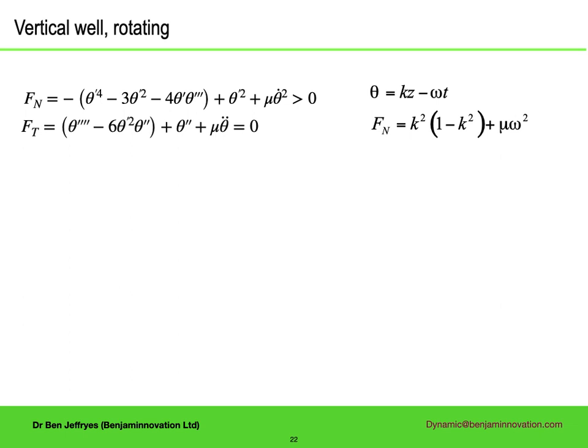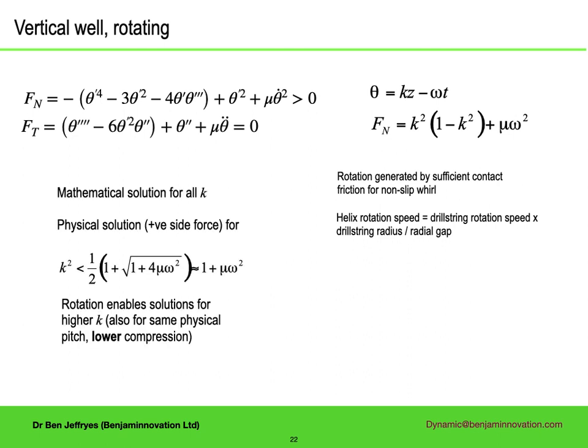Now a slightly more general situation. Still a vertical well, but we allow the angle to change at constant speed. Physically, the rotation of the helix around the hole might be generated by contact friction from the rotating pipe. The added centripetal force means that a helix of greater pitch is a physical solution. Or viewed another way, a helix with the same pitch in physical coordinates, but with a lower compression.